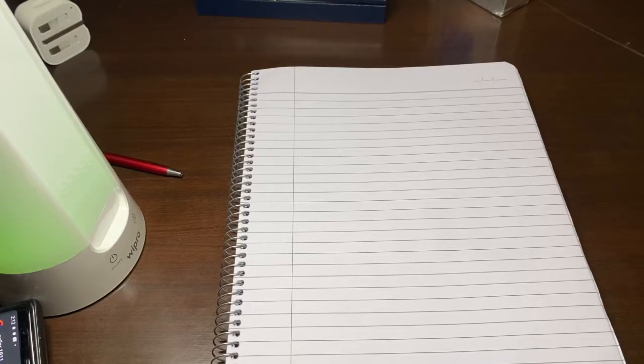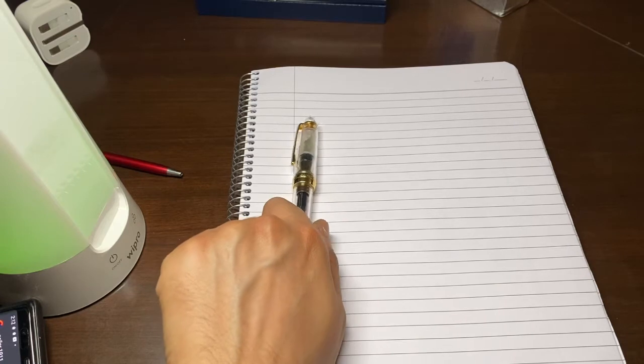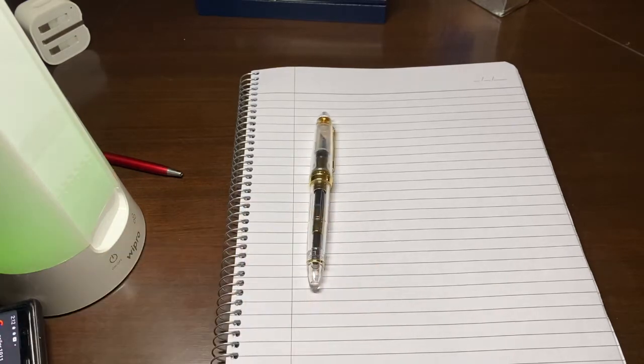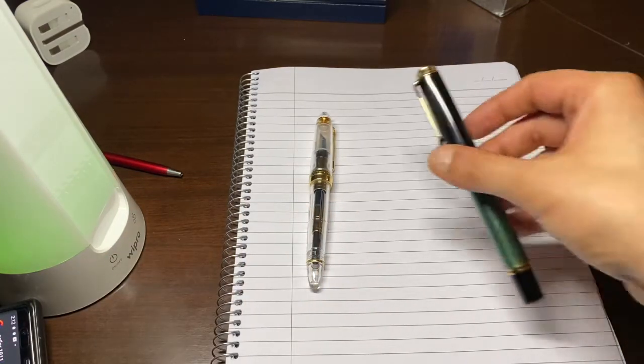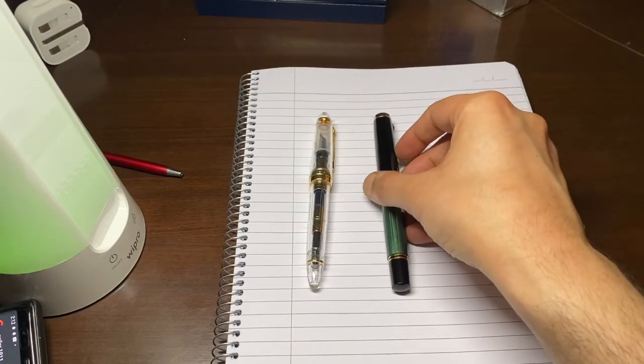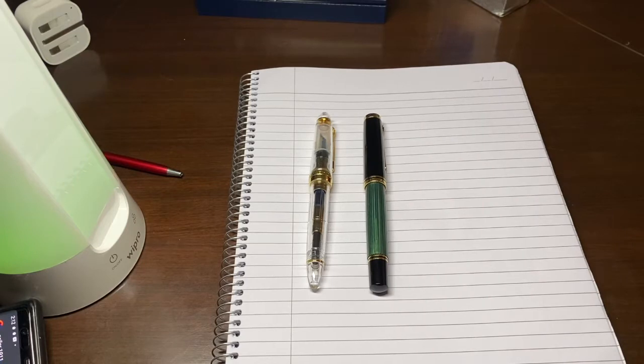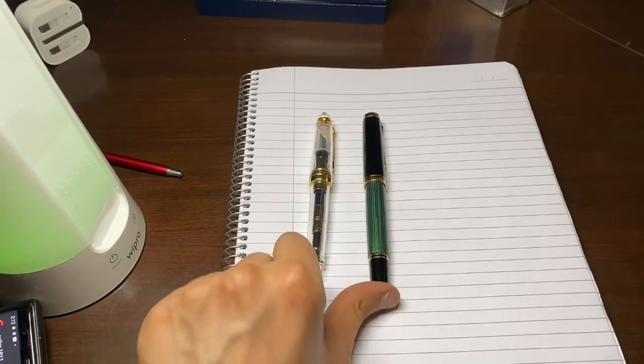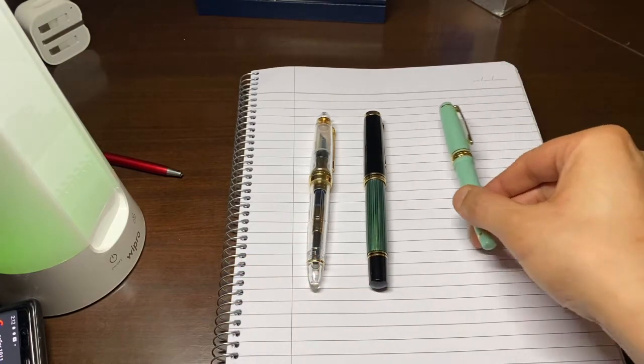So let's do a basic size comparison. This is the Sailor 1911 Demonstrator. Then I have a very beautiful Pelikan M800 here which is one of my grail pens, I'll make a video on that soon. And then I have again a Sailor, this is the Sailor Progres Slim from the Fairy series.